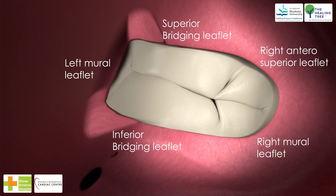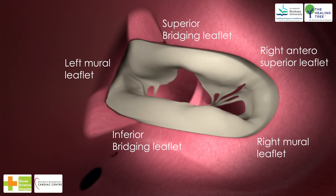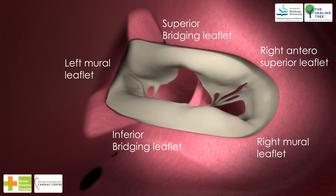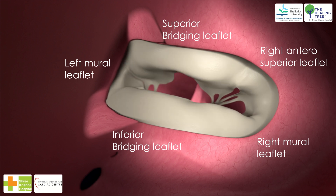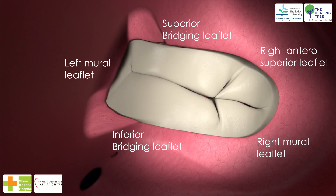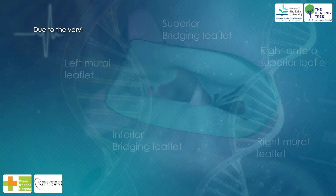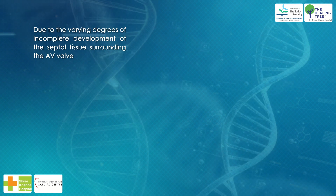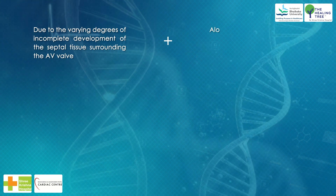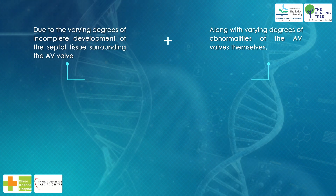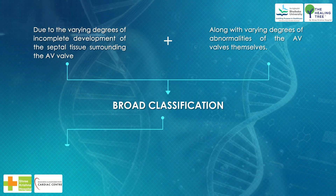The right inferior mural and right anterior superior leaflets are located inferiorly and anterosuperiorly, respectively, in the right ventricle. The zone of apposition of the inferior and superior bridging leaflets is the most frequent site. The common valve will have a single common orifice or will be divided into two orifices by a tongue of valve tissue joining the bridging leaflets, providing the basis for broad classification based on varying degrees of incomplete development of septal tissue surrounding the AV valve.